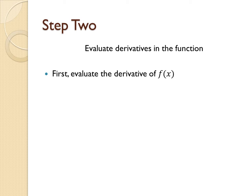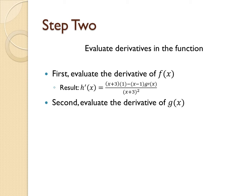The derivative of negative 1 would be 0 because it's a constant. Thus, our result would be h prime of x equals x plus 3 times 1 minus x minus 1 times g prime of x all over x plus 3 squared.